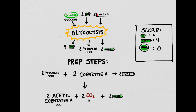In glycolysis, we started with one molecule of glucose, two molecules of ATP, and two molecules of NAD+. After glycolysis, which requires a boost of energy from ATP, we generate four molecules of ATP, two molecules of pyruvate, and two molecules of NADH.